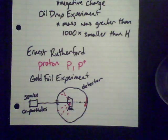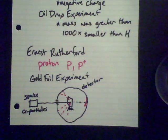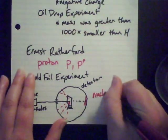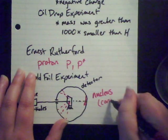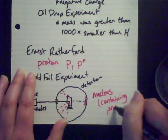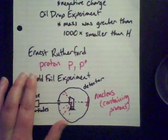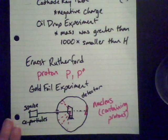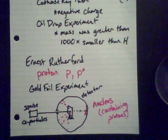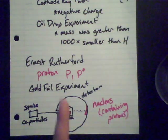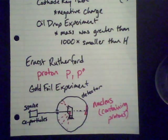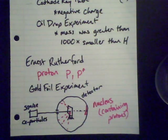There must have been something in there that was deflecting these particles. That something turned out to be the nucleus of an atom. So he not only discovered the proton but also discovered the nucleus — the center of the atom — and figured out that it contained protons. Rutherford was famously quoted as saying it was as if he had shot a gun at a piece of tissue paper and the bullet bounced backwards — that's how surprised he was.